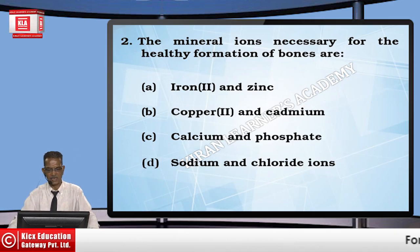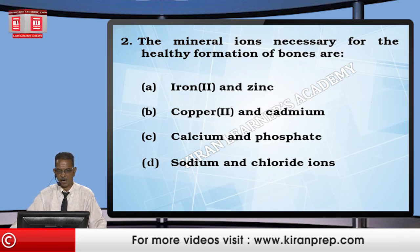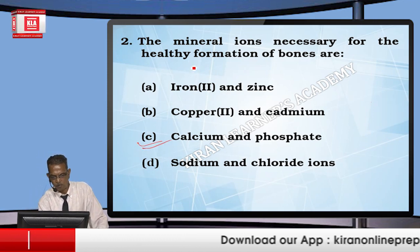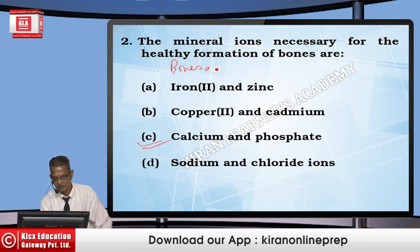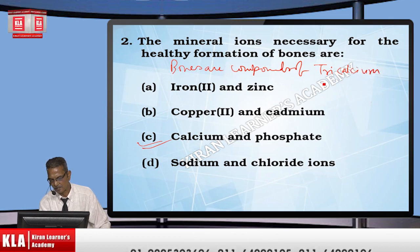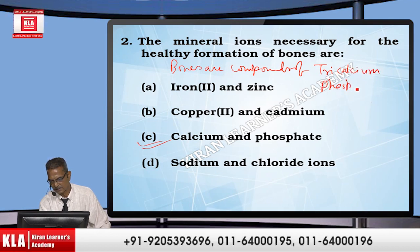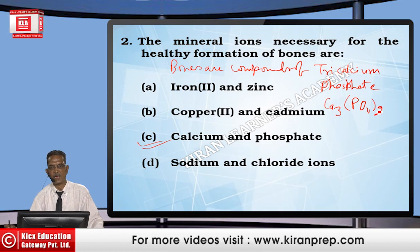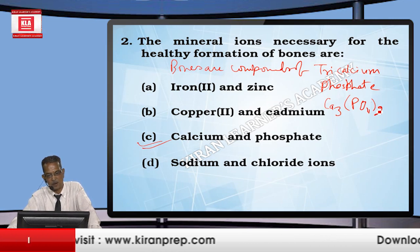The mineral ions necessary for healthy formation of bones are calcium and phosphate (option C). Bones are compounds of tricalcium phosphate — Ca₃(PO₄)₂ — so it is calcium ions and phosphate ions that are involved, making option C the correct answer.